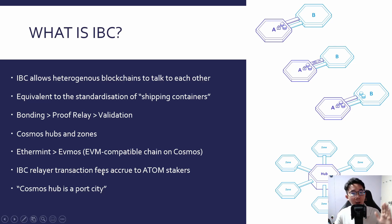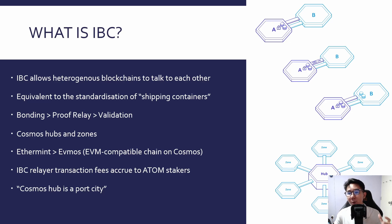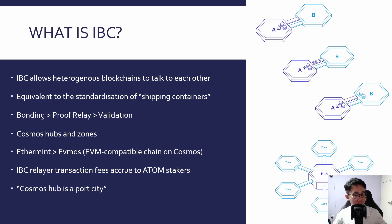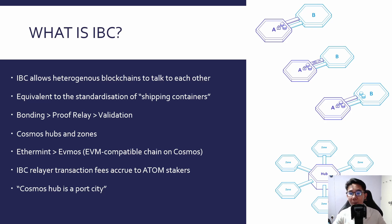All transactions through IBC have related transaction fees, and all these fees actually accrue back to the ATOM stakers — there is very big value accrual tokenomics here if this expands and becomes big. A way to think of it is that Cosmos Hub is a port city, just like airports and ports in the world. If you want to ship something or fly from one country to another, not all of it is through a direct route — most of the time it's through some kind of transit through a central port, and that is what Cosmos Hub is all about.